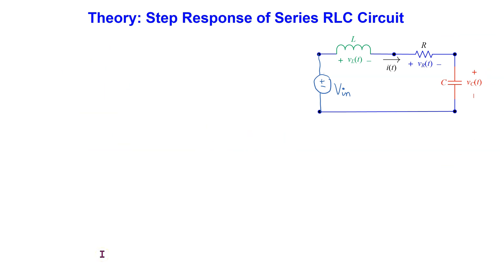First, let's look at how the circuit works. The capacitor is initially uncharged. When the DC voltage source is switched on, the capacitor will begin to charge and store energy.